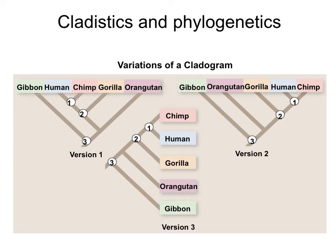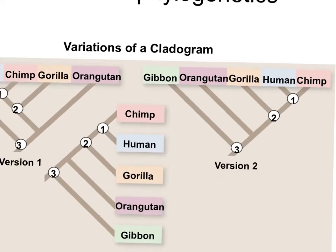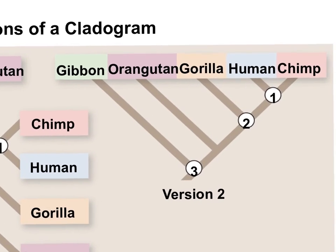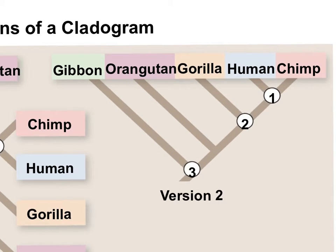These trees can be difficult to interpret, but all the trees we have here show exactly the same information — they can just be represented in different orientations. Let's take a closer look at this group: here we have humans and chimps, and we can see that humans and chimps share a recent common ancestor.